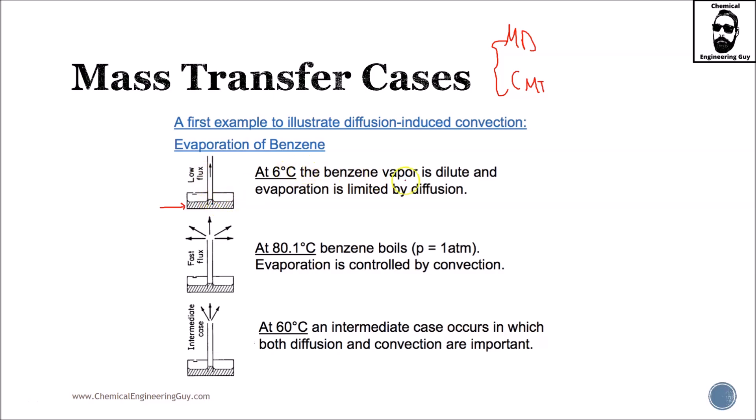At low temperatures, the benzene vapor is dilute and evaporation is limited by diffusion. Remember the main equation of flux was equal to the molecular diffusion part and the total bulk flow velocity.